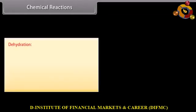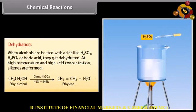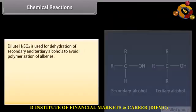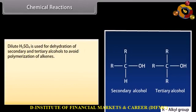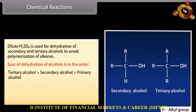Dehydration: when alcohols are heated with acids like sulfuric acid, phosphoric acid or boric acid, they get dehydrated. At high temperature and high acid concentration, alkenes are formed. Dilute sulfuric acid is used for dehydration of secondary and tertiary alcohols to avoid polymerization of alkenes. The ease of dehydration of alcohols is in the order: tertiary alcohol, followed by secondary alcohol, then primary alcohol.